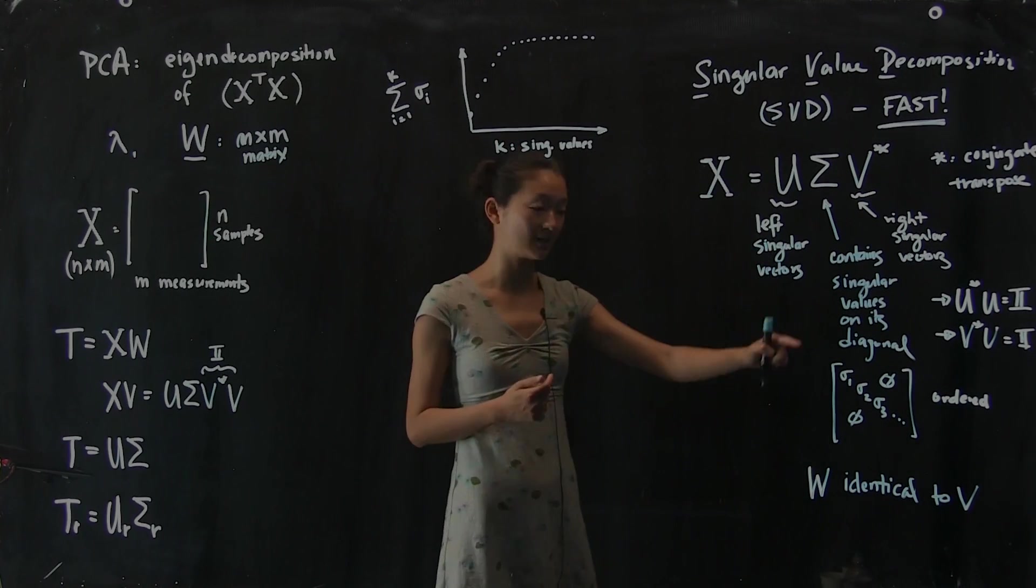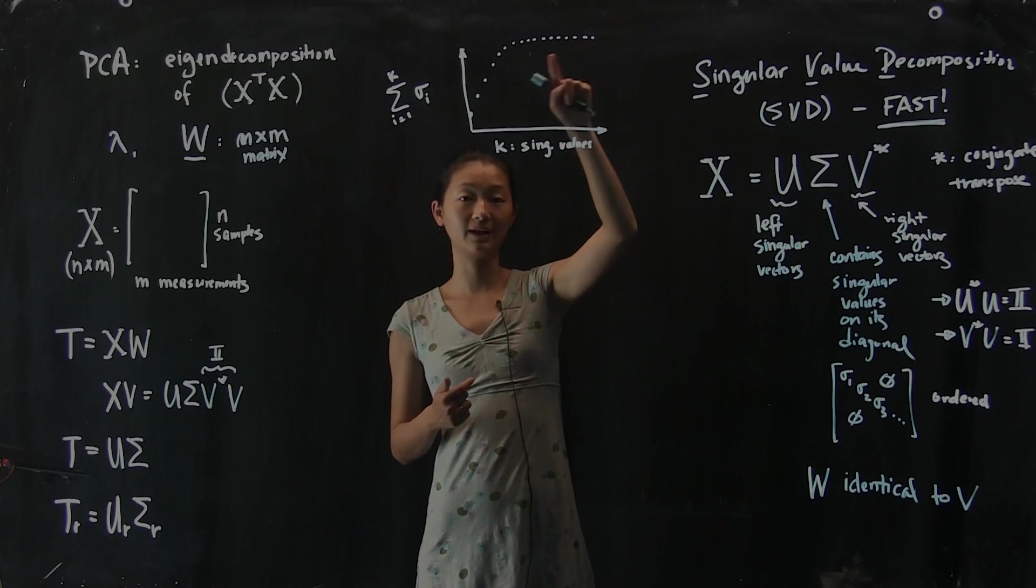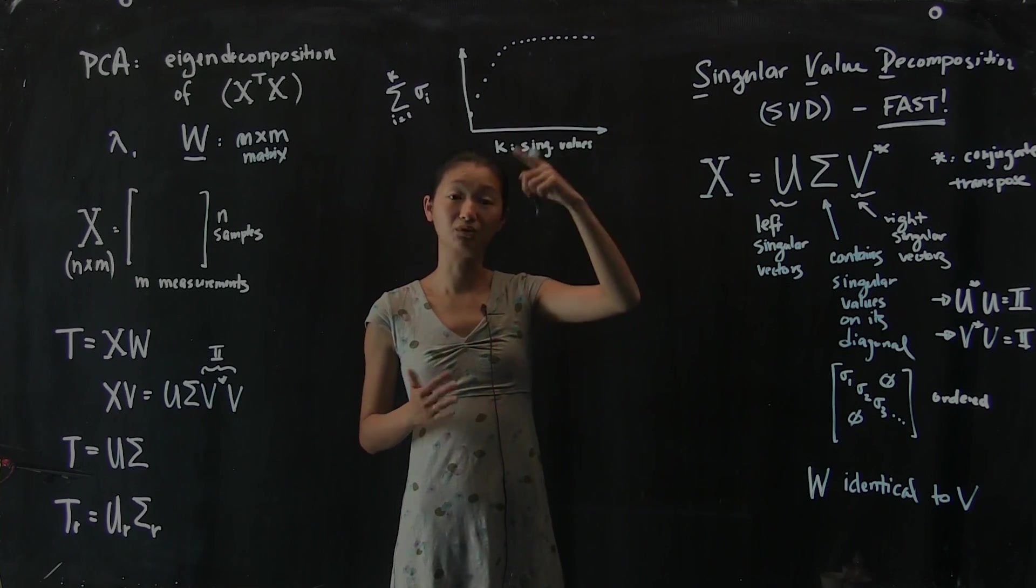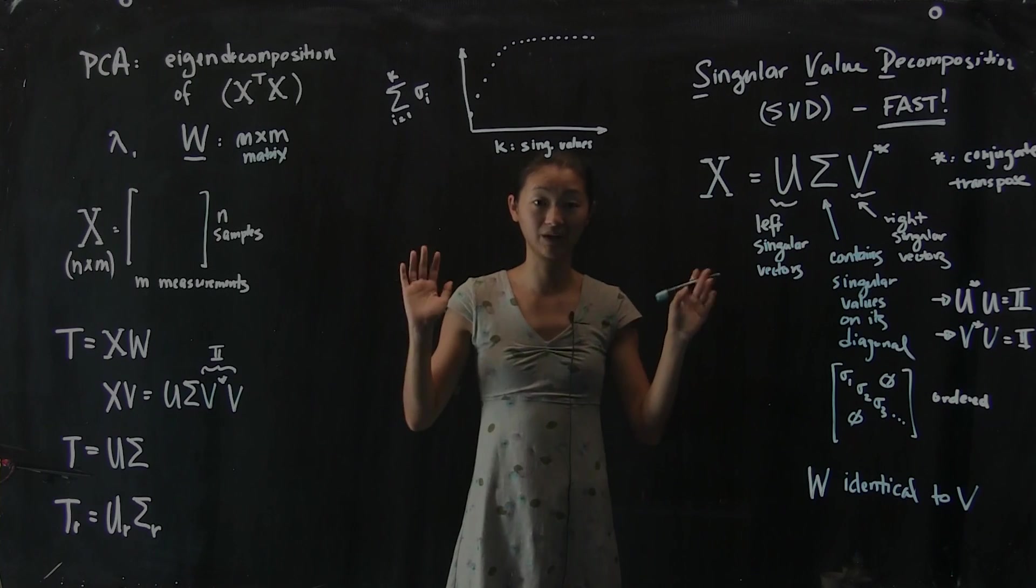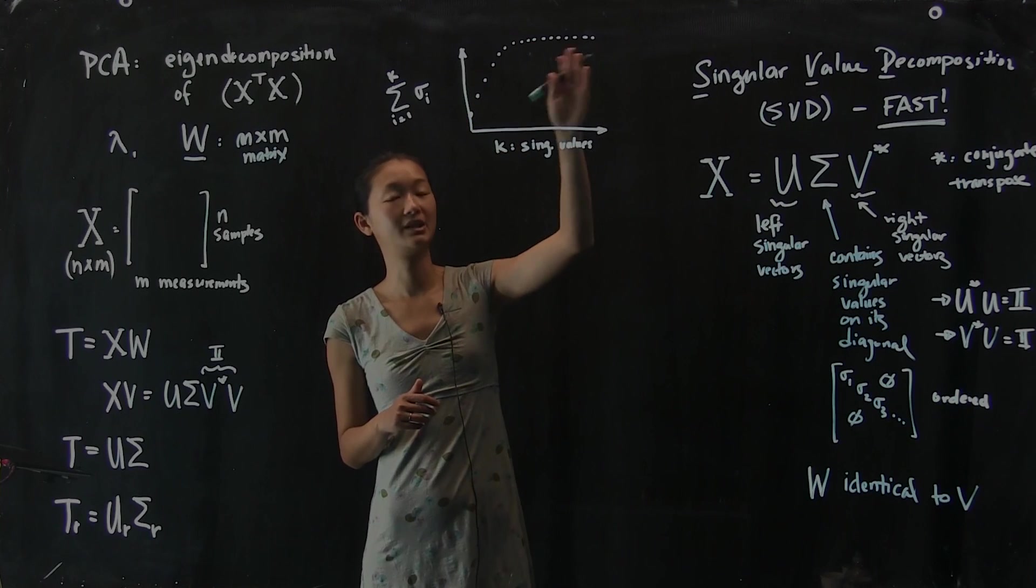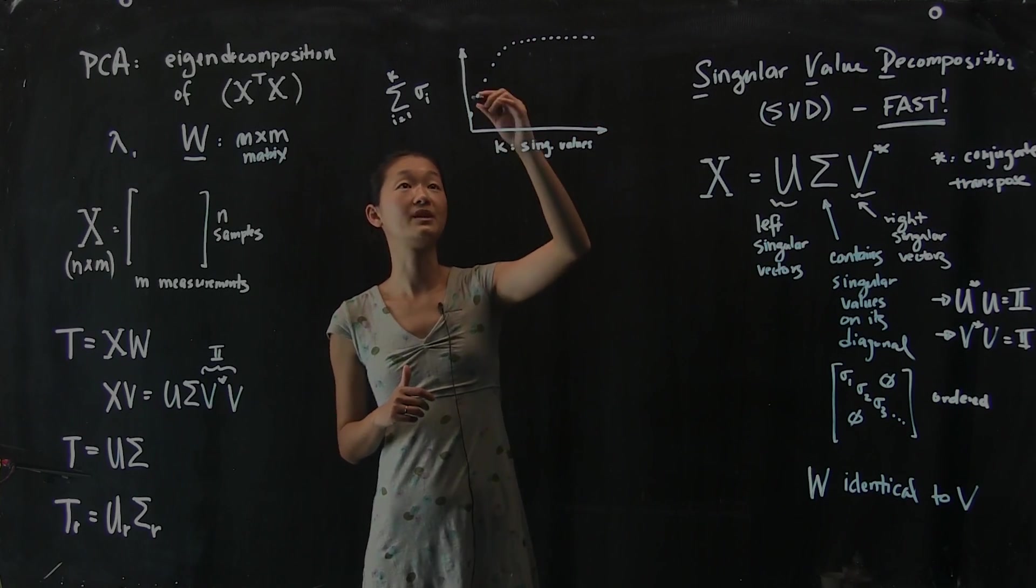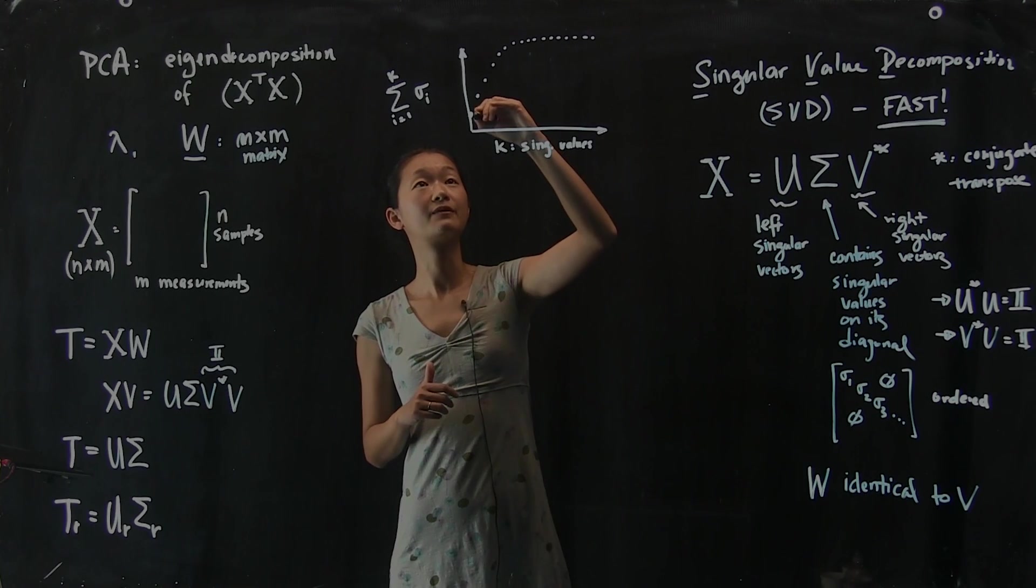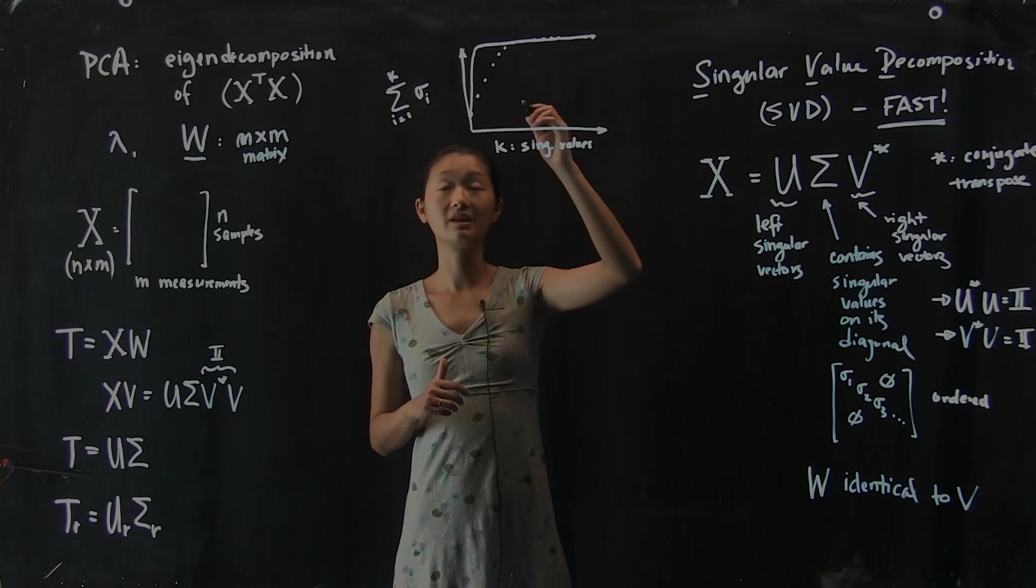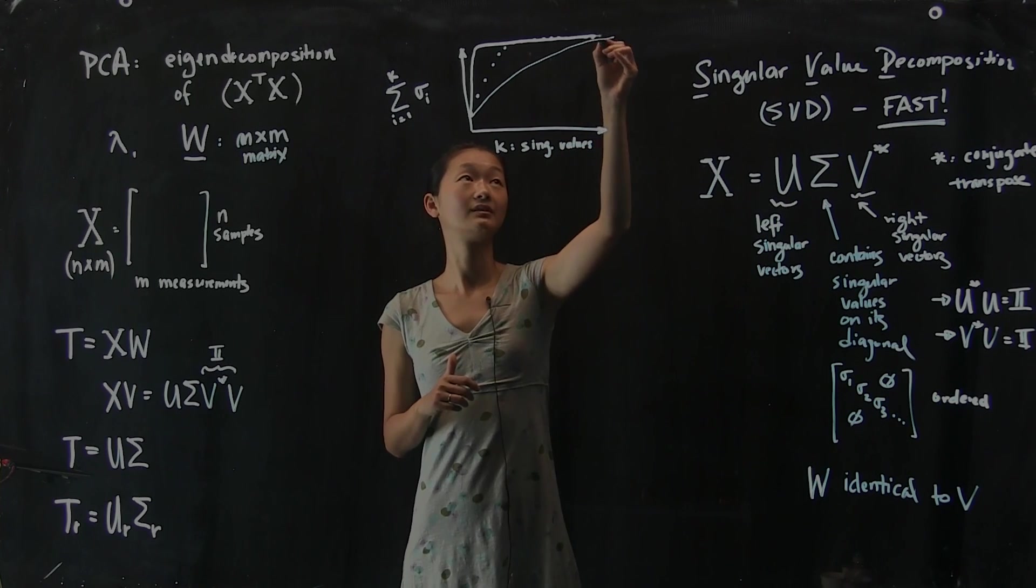Because what's going to happen is because singular values get smaller and smaller as you keep going, the cumulative sum of them is going to flatten out into a plateau and it's going to approach a maximum. And you can normalize that maximum to be 1, which means I've explained all the data, noise and all. Now what you're looking for is the shape of this curve. Because a couple of different things can happen. It could be super sharp where the first couple of components gives us all of the variance. Or in the other extreme, it could be pretty shallow and look something like that.